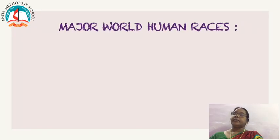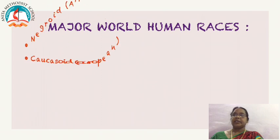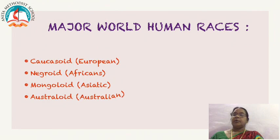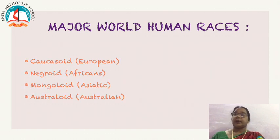The major world human races are: Caucasoids, that is Europeans; Negroids, Africans; Mongoloids from Asia; and Australoids from Australia. We will revise each one in detail.